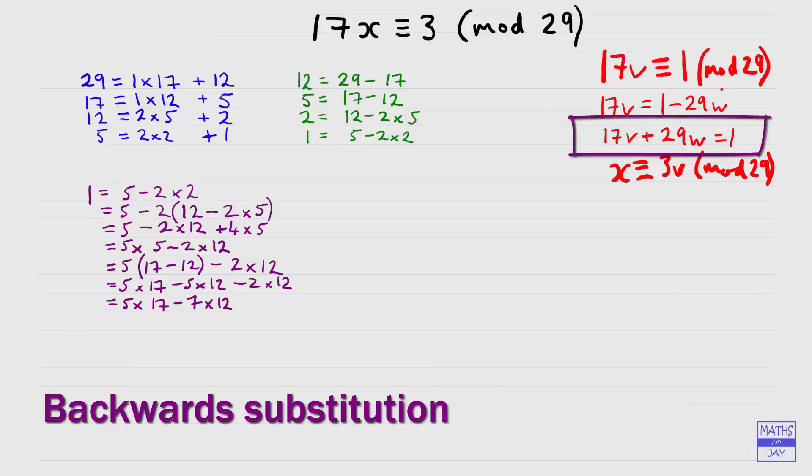So we've now expressed 1 in terms of 17 and 12. Remember our aim is to express 1 in terms of 17 and 29, so we're nearly there. All we need to do now is replace our 12 from our top line, where we've written 12 in terms of 29 and 17. And then with a bit of simplification, we'll be done. So we've got 5 times 17, we want the 17, so that's good. And then minus 7 times, and then 12 is 29 minus 17.